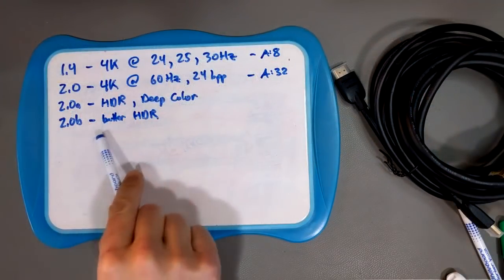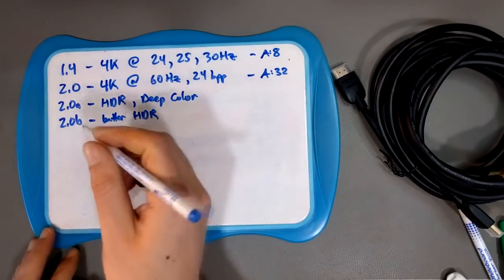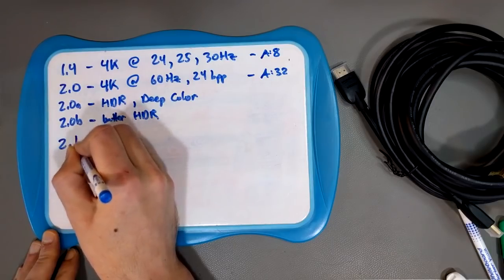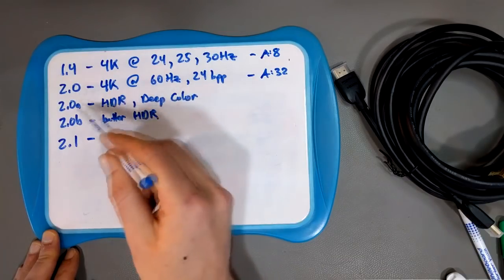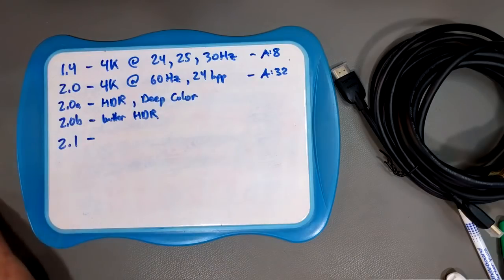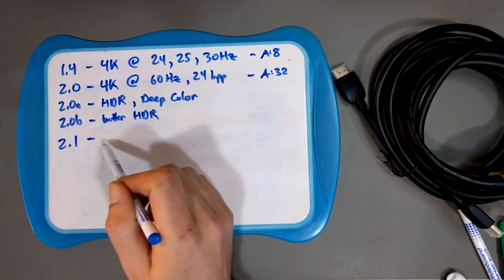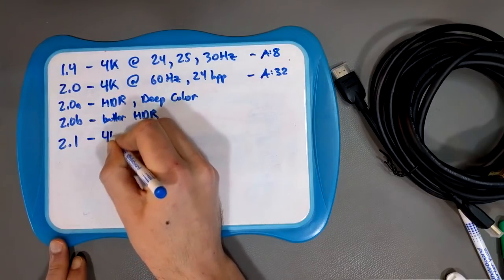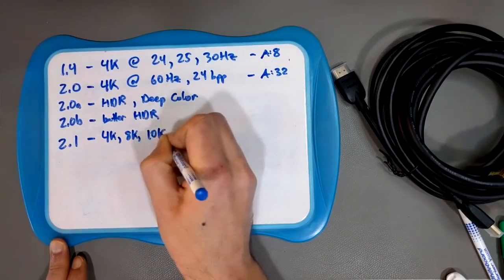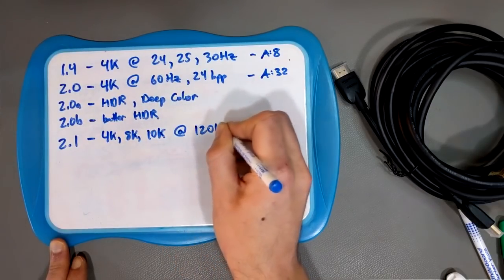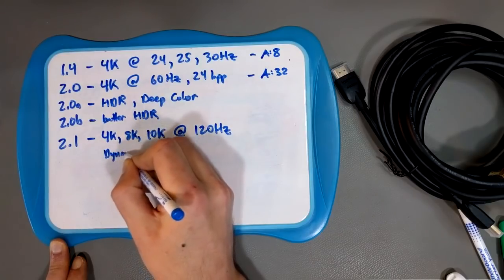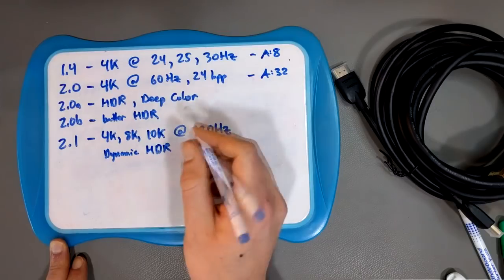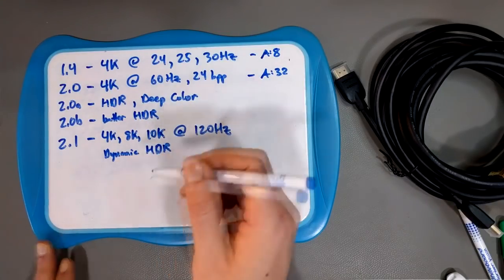So HDMI 2.0B just gave even better HDR. Then in 2017, it was actually just the end of 2017, they came out with HDMI 2.1. Now there the bandwidth jumped from, I think like the 18 gigabits of 2.0. 2.1 jumped to 48 gigabits per second, which is like crazy. And it also added support for 4K, 8K, 10K resolutions, all at 120 hertz, which is pretty good. It also added dynamic HDR, which is like even fancier HDR. And there's also like enhanced ARC and like a few other bits and bobs.